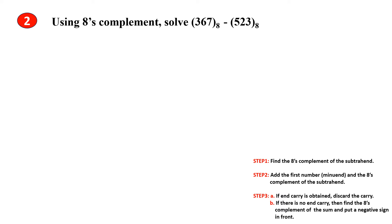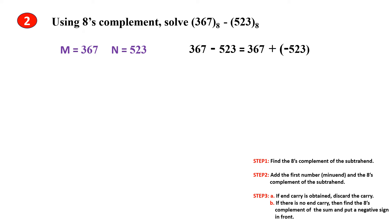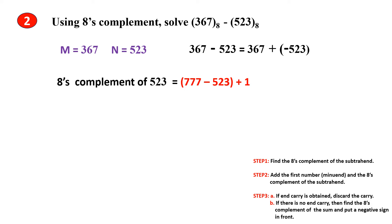Problem 2: Using 8's Complement, subtract the given two Octal numbers. So, m is 367 and n is 523. m minus n can be written as m plus minus of n. We represent this negative number using complements. As per Step 1, we are finding the 8's Complement of the Subtrahend 523. The 7's Complement plus 1 gives the 8's Complement: the 7's Complement is 254, then plus 1 gives the 8's Complement, which is 255.